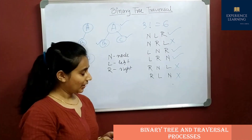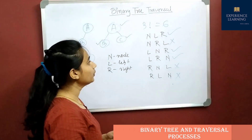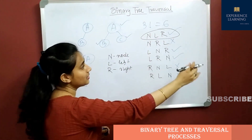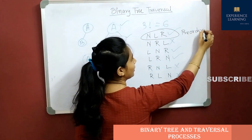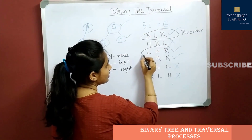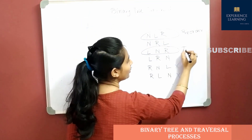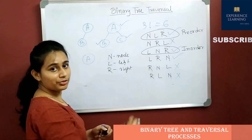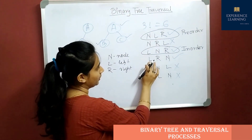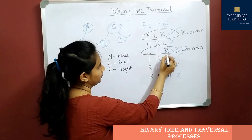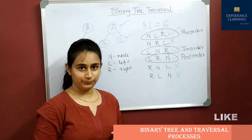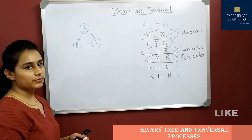The three standard traversals are: first, node-left-right, which is called pre-order traversal; second, left-node-right, which is called in-order traversal; and third, left-right-node, which is called post-order traversal.